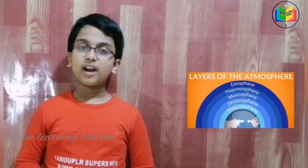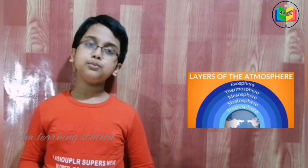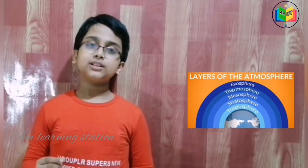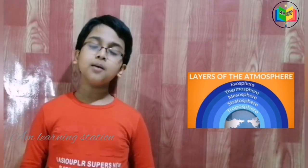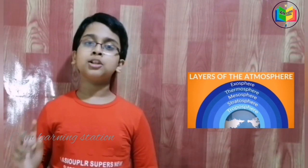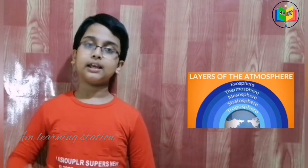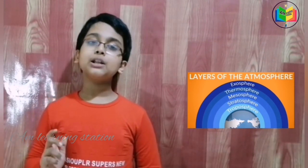Our final layer is the exosphere, which starts right above the thermosphere and goes up to 10,000 km high. This is the upper limit of our atmosphere.